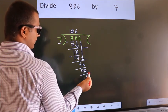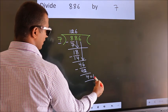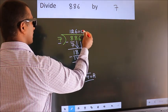No more numbers to bring down. So we stop here. This is our remainder. This is our quotient.